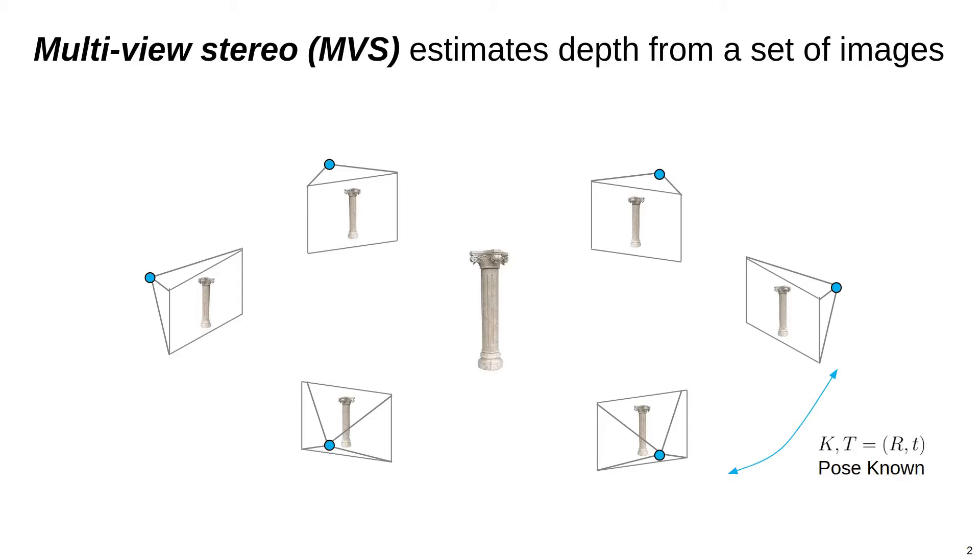Multiview Stereo, or MVS, is a fundamental problem in computer vision where the geometry of a scene is estimated from a set of images taken from known but unconstrained views.